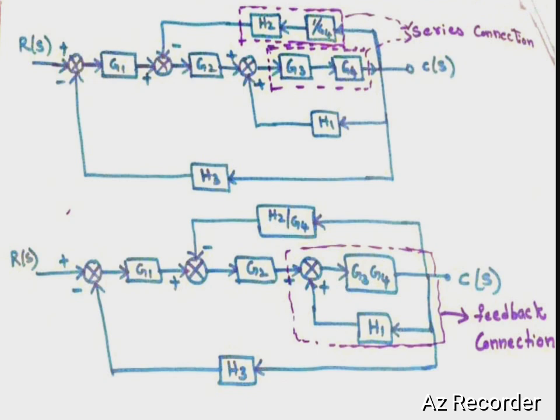Also, G3 and G4 are now in series. To reduce the block diagram, I am using the series connection formula — that means the product of G3 and G4, and also the product of H2 and 1/G4. So these two blocks G3 and G4 are converted into one block as G3·G4, and the H2 and 1/G4 blocks are converted into H2/G4.